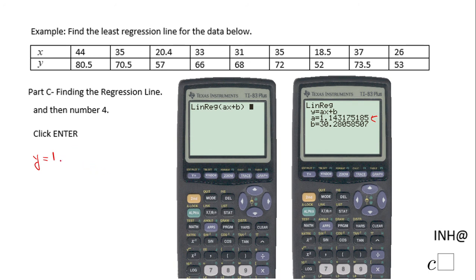So I'll say 1.143x plus b. And I'm going to round that one also to the nearest thousandth, so it's going to be 50.281. And this is the regression line using this TI calculator for this data.